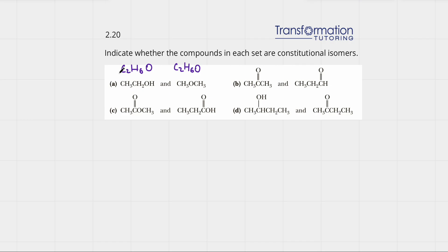So the formula is indeed the same. Now do they have a different structure? On the left we have a functional group OH, but on the right our oxygen is in between two carbons. Here the oxygen is at the end of the chain connected to a hydrogen, but here the oxygen is connected to two carbons — it's not at the end of the chain. Therefore, even though they have the same formula, they have a different structure and different functional groups. This is an alcohol and this is an ether, and therefore they must be constitutional isomers. So this one is a yes.